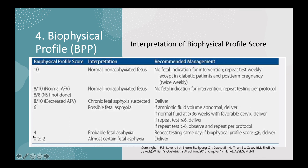If the BPP score is 4, probable fetal asphyxia is suspected; repeat testing within the same day, but if the score remains 6 or less, deliver. If the score is 0 to 2, fetal asphyxia is almost certain and delivery is required.